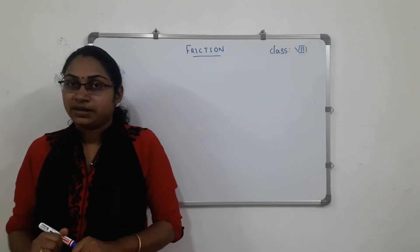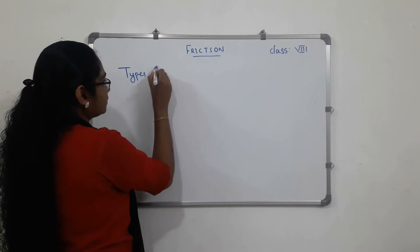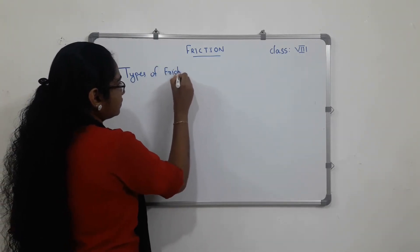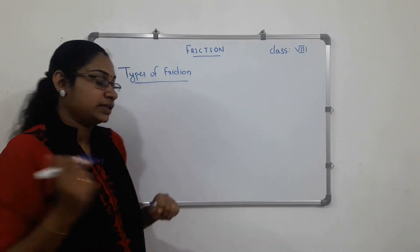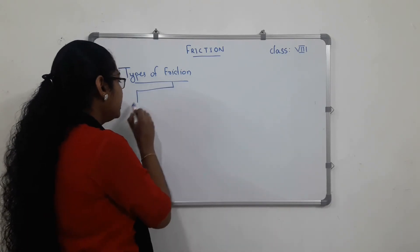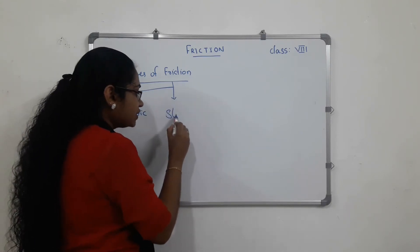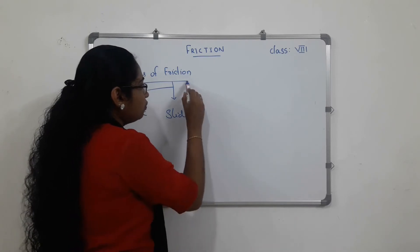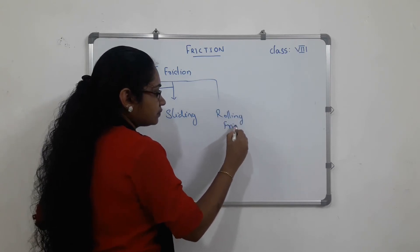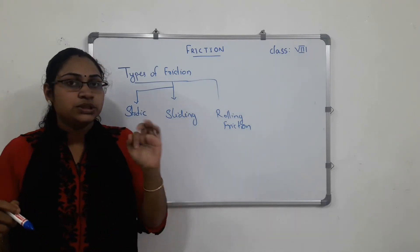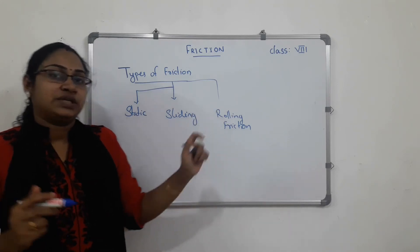Now we will look at the types of friction. There are three types of friction: first, static friction; second, sliding friction; third, rolling friction.